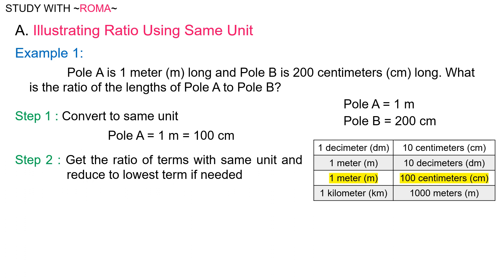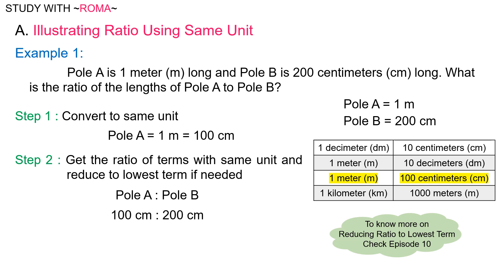Step 2: get the ratio of terms with the same unit and reduce to lowest term if needed. Pole A is to Pole B is equal to 100 centimeters is to 200 centimeters. This ratio is not in its lowest term. To know more on reducing ratio to lowest term, check episode 10. The greatest common factor of 100 and 200 is 100. So our ratio will be 100 divided by 100, is to 200 divided by 100, which is equal to 1 is to 2.